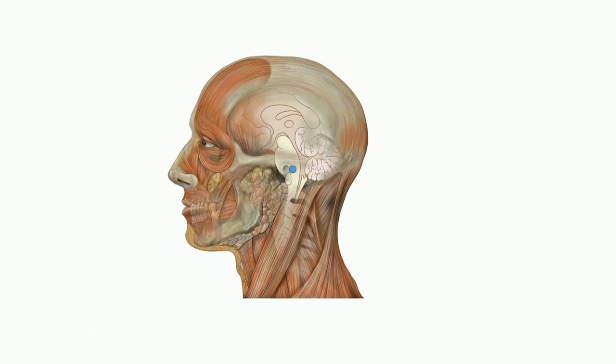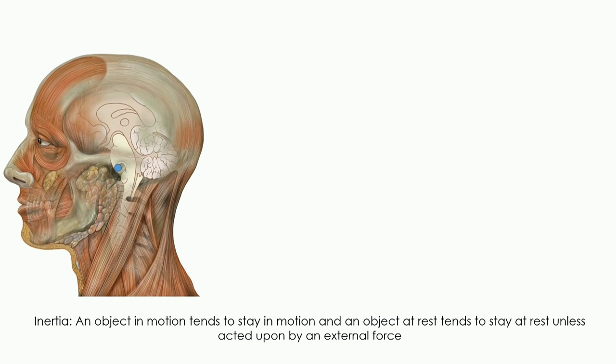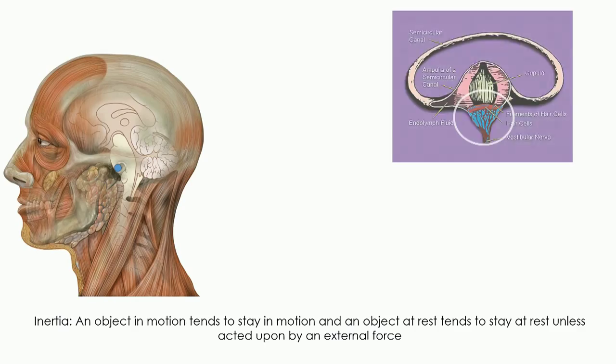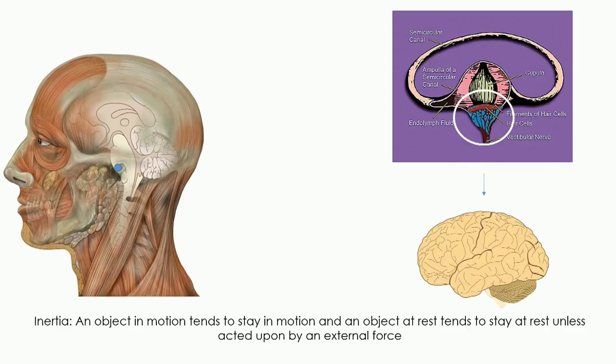When your head moves, the endolymph lags behind because it tends to stay in place, the basic principle of inertia. This lagging of the endolymph stimulates the hair cells, and a signal is sent to the brain telling it that you are moving.